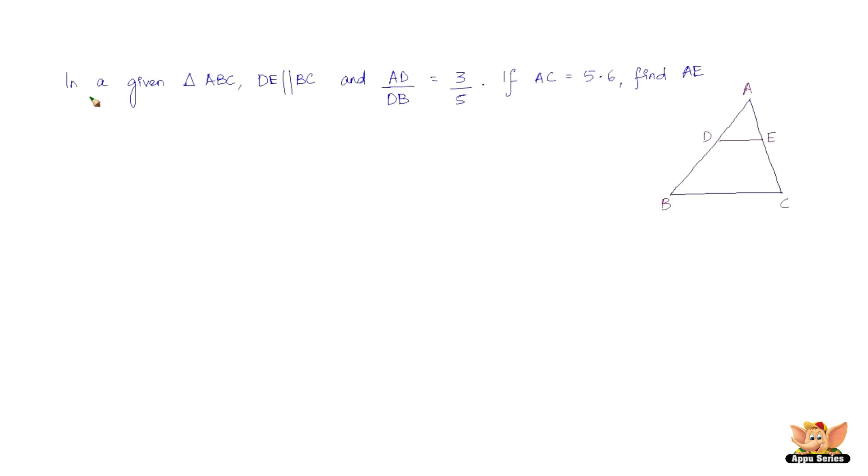So here we have another problem which reads like this. In a given triangle ABC, you can see that DE is parallel to BC, and AD/DB is of the ratio 3/5, and AC is 5.6. This is not really different from the previous problem. We need to find AE. Last time we found KQ. Here we are finding AE. That's all the difference. So again, in the triangle ABC.